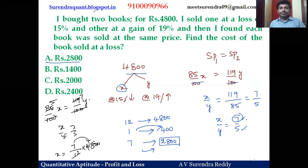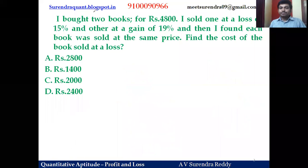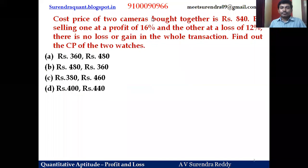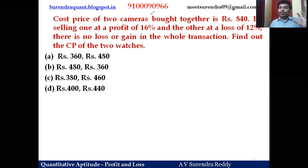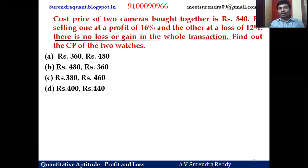Next question: the cost price of two cameras bought together is 840 rupees. By selling one at a profit of 16 percent and the other at a loss of 12 percent, there is no loss and no gain in the whole transaction. Find the cost price of the two cameras.